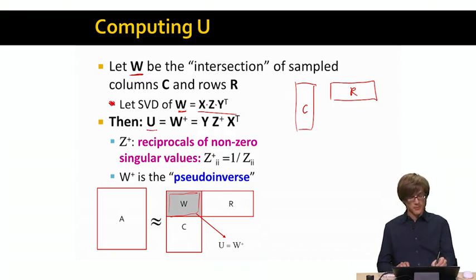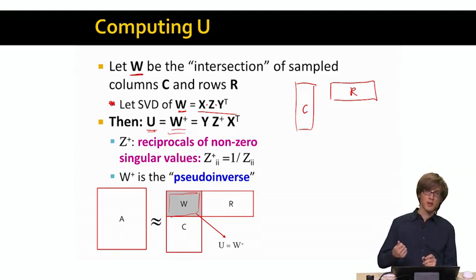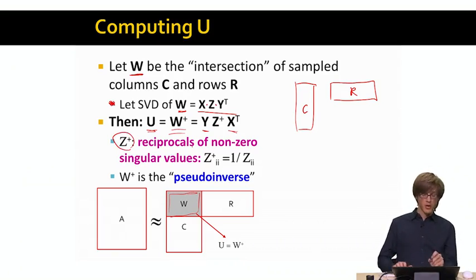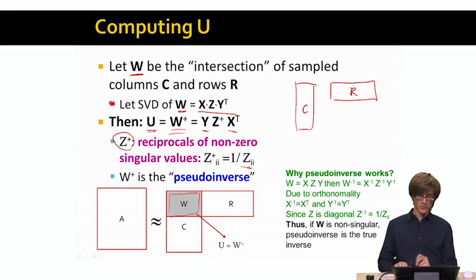And then I will compute the matrix U, which is called the Moore-Penrose pseudo-inverse. And the way I do this is basically the mathematical symbol for this is that I take my matrix W and I want to compute this pseudo-inverse. So I denote that as W⁺. And the way I do this is I compute this by taking my matrix Y, multiplying it with Z⁺ times X transpose. Where the matrix of Z⁺ is simply the reciprocal values of non-zero singular values. So if a singular value in my matrix Z is non-zero, then Z⁺ is simply one over that singular value that I have there that is non-zero. And if the singular value is zero, then I just leave the whole thing at the zero. And this is called the pseudo-inverse.